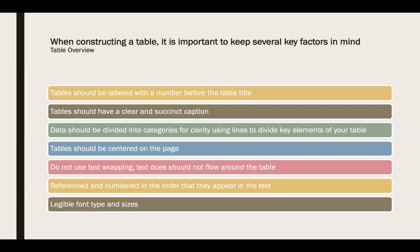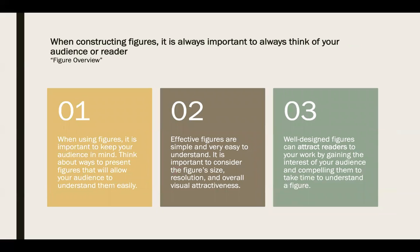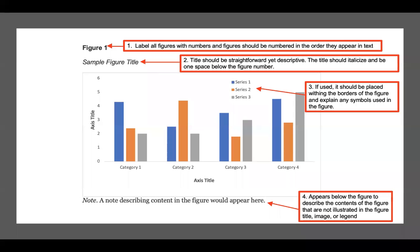So now we're going to talk about figures. As previously mentioned, tables and figures have distinguishing characteristics. When using a figure, it is important to consider the size, resolution, and overall attractiveness of the figure. A well-designed figure is compelling and takes little time to understand. As with tables, figures should be labeled and include a title. They should also have legends that effectively describe the contents of the figure. Notes should be included to describe the figure as well — details that are not apparent in the figure, the title, or even the legend.